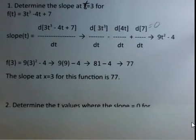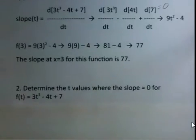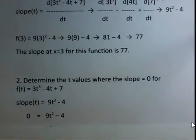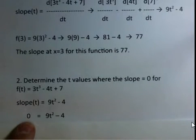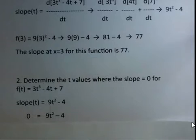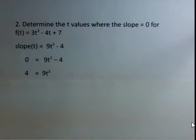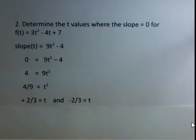Where is the slope equal to 0 for this function? The slope function we have is 9t² - 4, so we put in 0 for the slope: 0 = 9t² - 4. Now we solve this quadratic equation. Add 4 to both sides, divide by 9. Taking the square root of both sides gives us plus or minus 2/3.